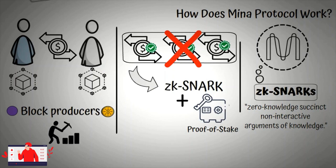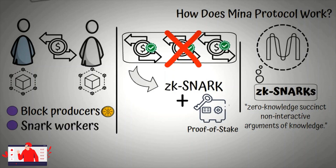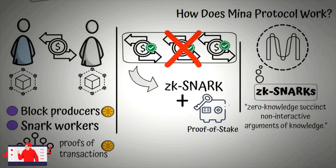Block producers are like the miners or validators of other blockchains. The second nodes are the SNARK workers; they dedicate computing power to help compress network data and generate proofs of transactions. Block producers can then bid on these proofs, for which SNARK workers are paid in MENA.